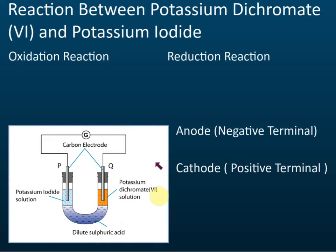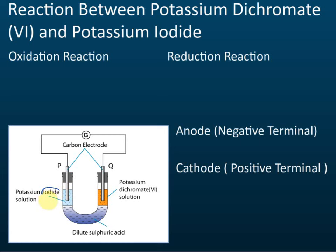When you see this diagram, the very first thing you need to identify is which one is the oxidizing agent and which one is the reducing agent — P and Q. Q is potassium dichromate and P is potassium iodide. So which one is the oxidizing agent, P or Q? Let's check: iodide is a halide, and this is potassium dichromate.